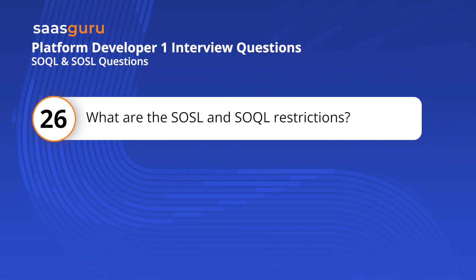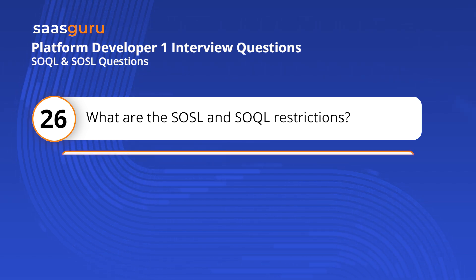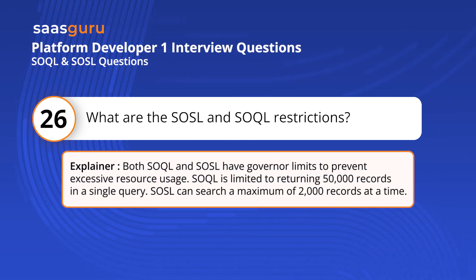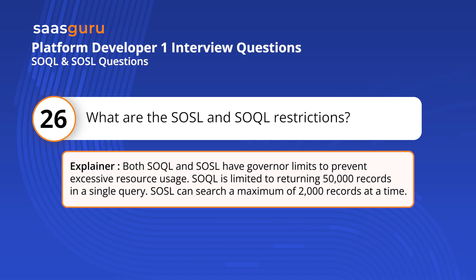Question 26: What are the restrictions for SOSL and SOQL? Both SOQL and SOSL have governor limits to prevent excessive resource usage. SOQL is limited to returning 50,000 records in a single query, while SOSL can search a maximum of 2,000 records at a time.